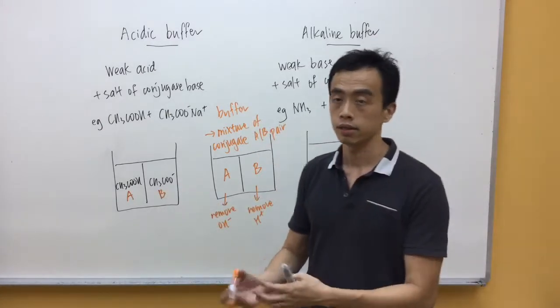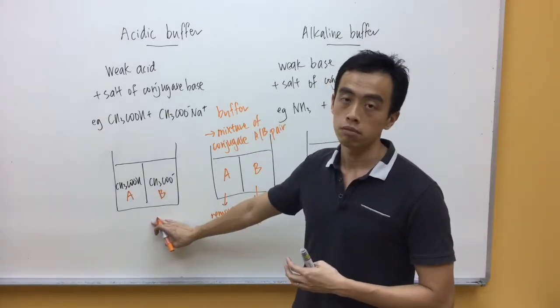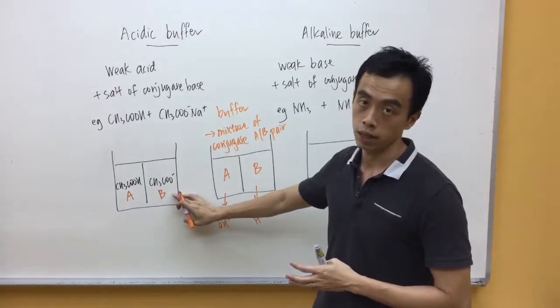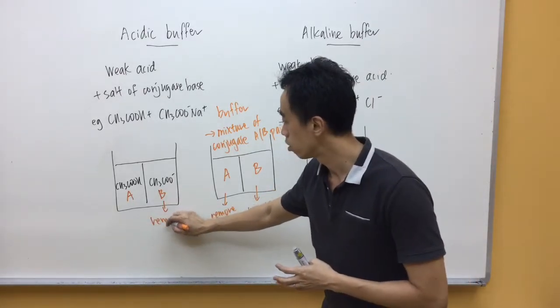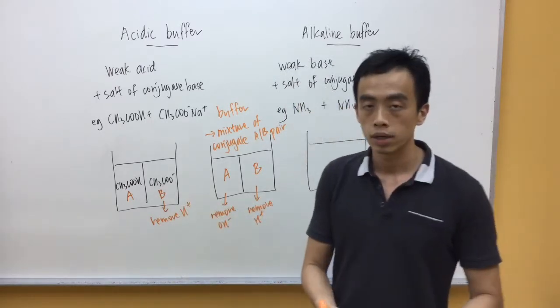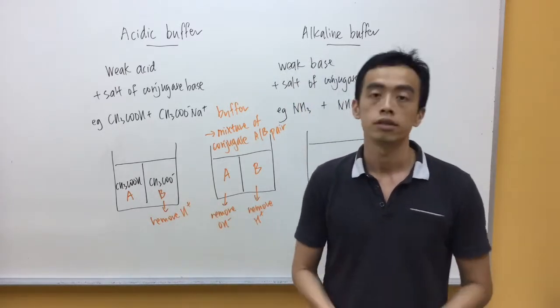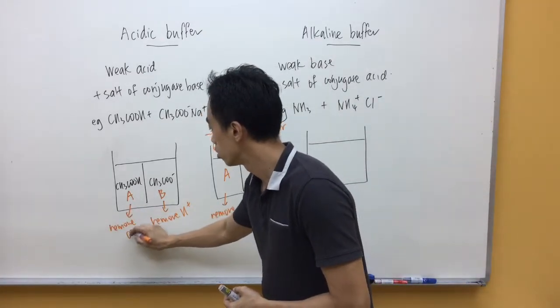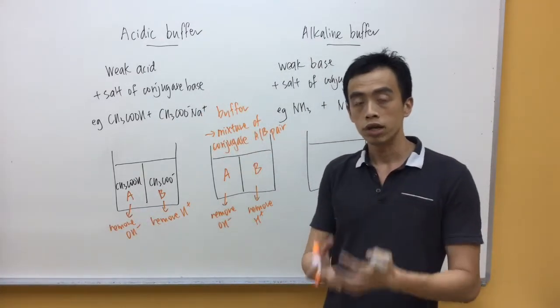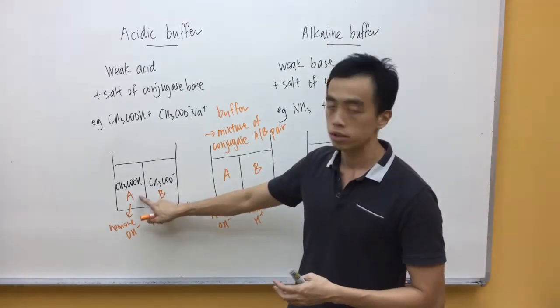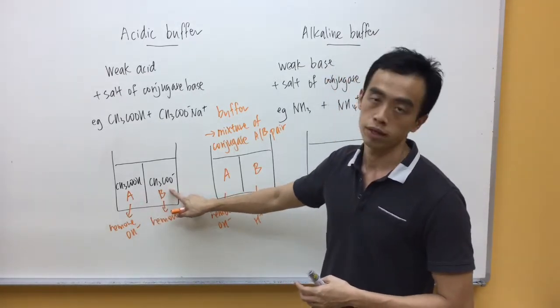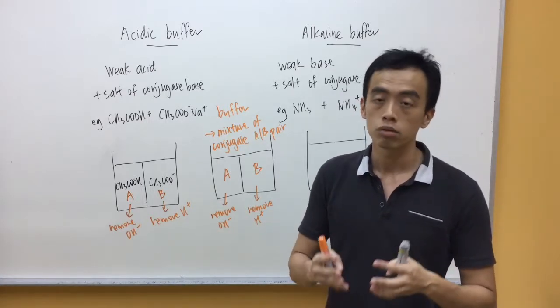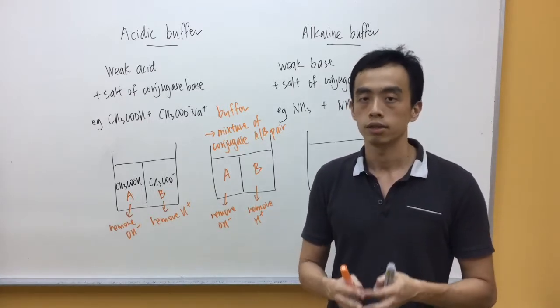How does this acidic buffer maintain pH? When you add H+ into the solution, the base will remove the H+. When you add OH- into this solution, the acid will remove the OH-. What you notice is the relationship between this mixture, CH3COOH and CH3COO-. They are a couple. The difference between them is just H+, so they are a conjugate acid-base pair.